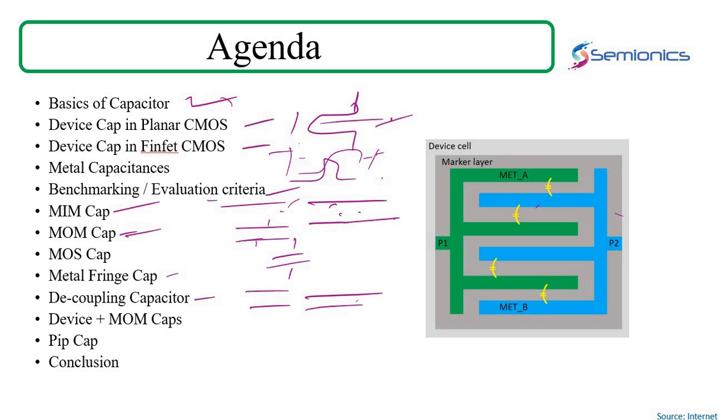We've seen a lot of decoupling capacitors while doing layouts. What exactly are these? Where are they used? When are they used? What is the main reason behind using this? How does it help when dealing with IR drop? What is ground bounce? What is VDD bounce?